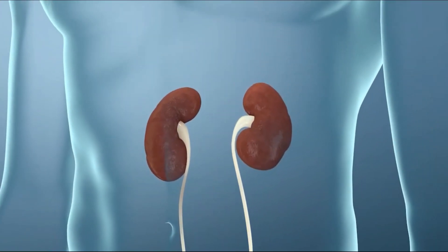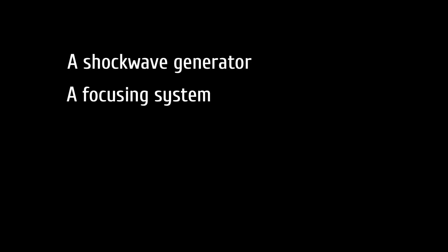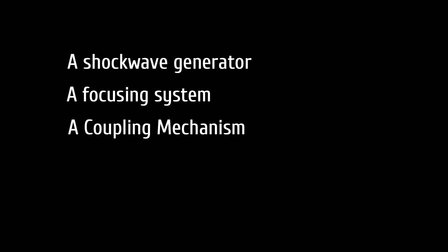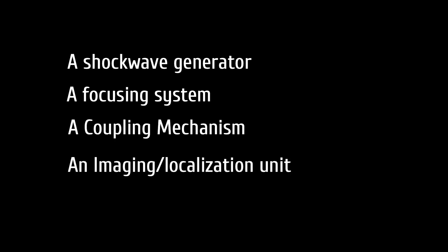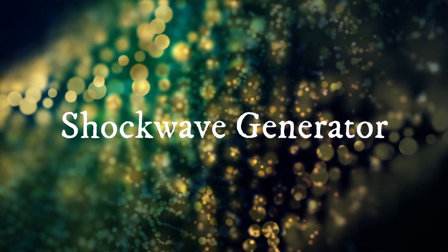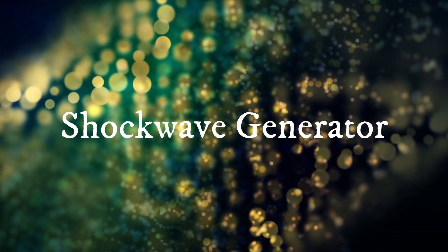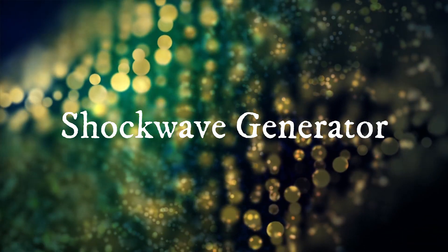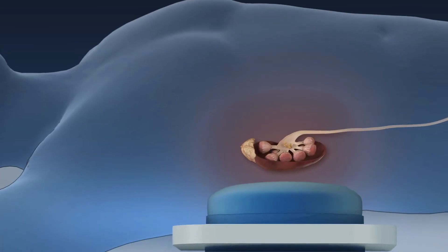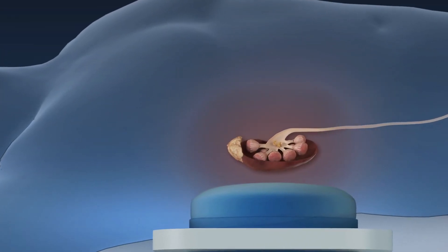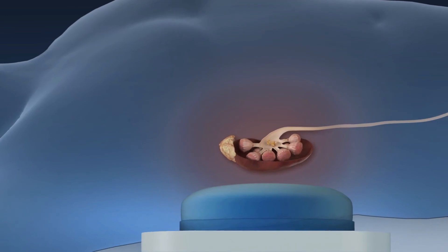All lithotripsy machines share four basic components: one, a shockwave generator; two, a focusing system; three, a coupling mechanism; and four, an imaging localization unit. Shockwaves can be generated in one of three ways.